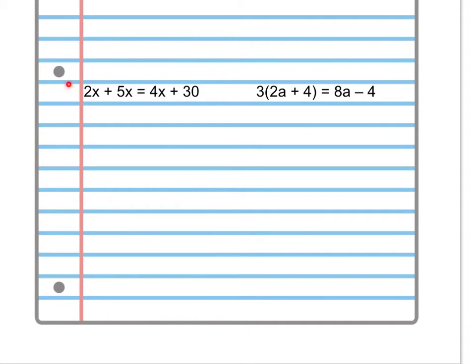If you guessed that we could combine these two, add them together, you are correct. So 2x plus 5x would make 7x's, which equals 4x plus 30. At this point, you have a two-step equation that you can solve on your own. Actually, this is a little bit more than a two-step equation. So let's go ahead and finish solving this one and I'll show you how to start the other problem too.